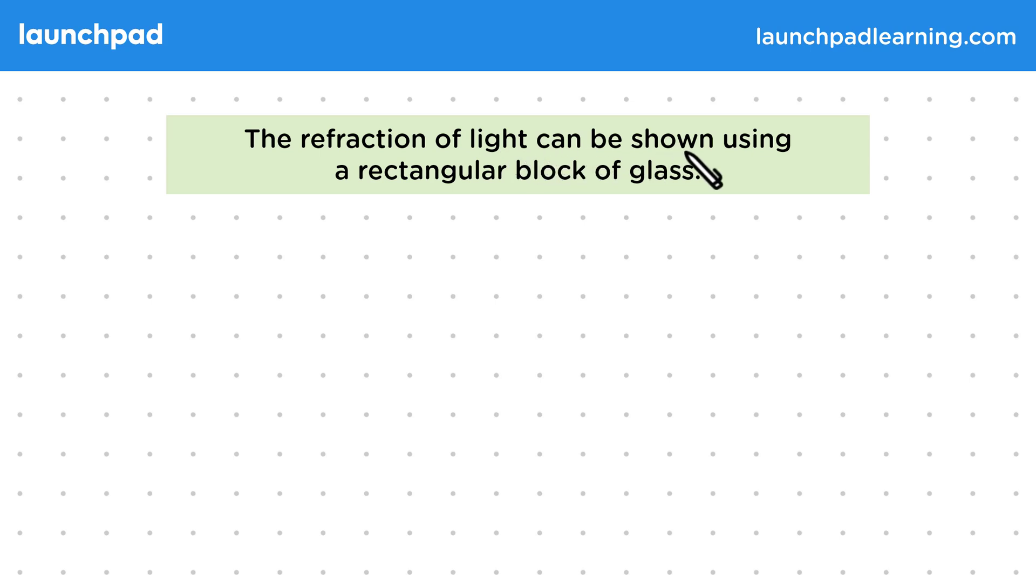The refraction of light can be shown using a rectangular block of glass. Remember that refraction is when a wave changes direction as it transmits from one medium to another.